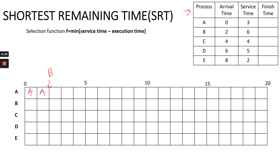At time slot two, process B arrives. We now need to compare the remaining time for process A and process B. For process A, the service time is three and the currently executed time is two, so the remaining time for A is one. For process B, the service time is six and no execution time yet, so the remaining time is six. Comparing A and B, A has the shorter remaining time, so process A continues executing in the CPU.